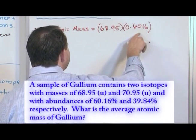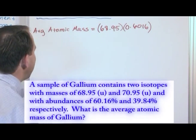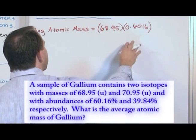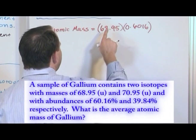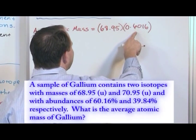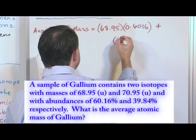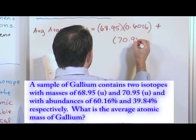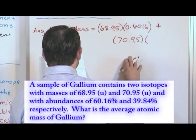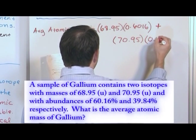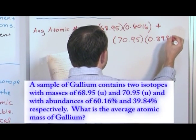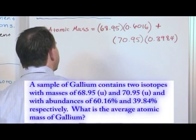We don't write 60.16%. I'll come back to that later. You always write it as a pure decimal. So we have that atomic mass of that isotope times its percent abundance, and you have to add to that the atomic mass of the second guy, 70.95, times the percent abundance of this guy, 0.3984.